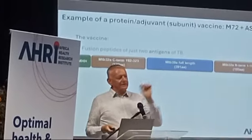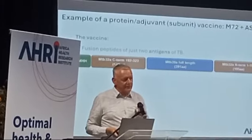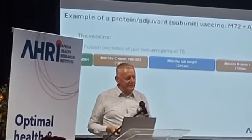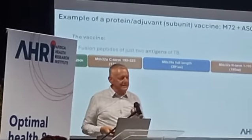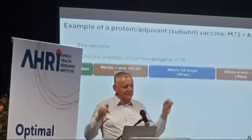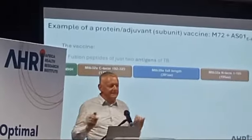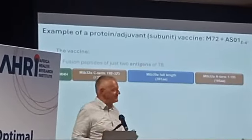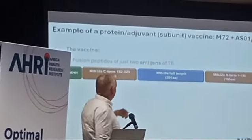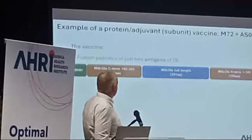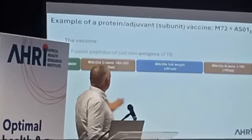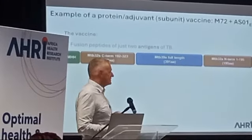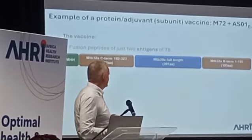We only take two out of those 4,000 components — two of those antigens — and we put them together in a way that we think is best. That's what you see there. So fusion peptides are two antigens of TB.